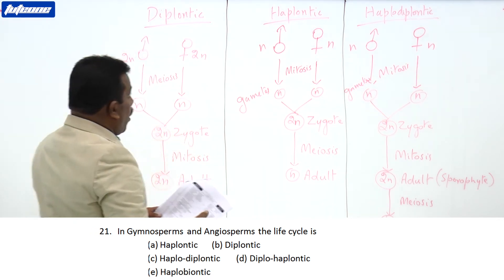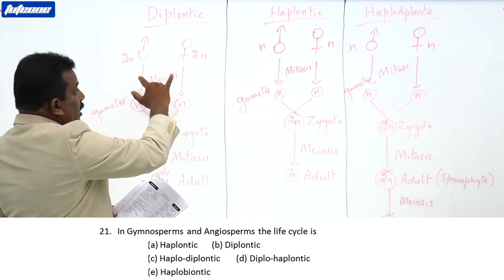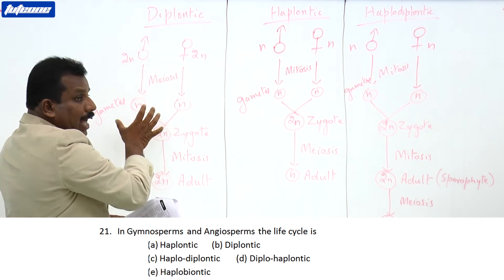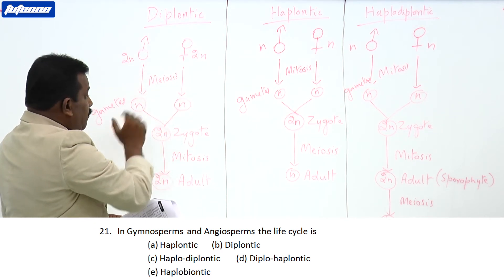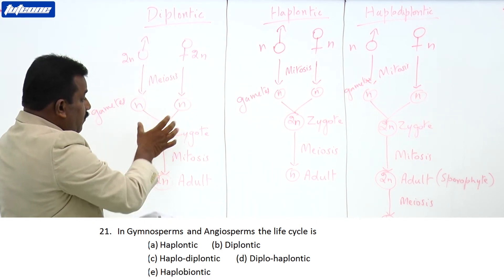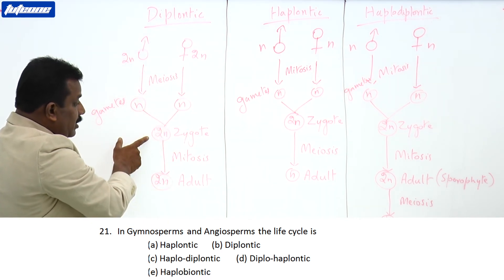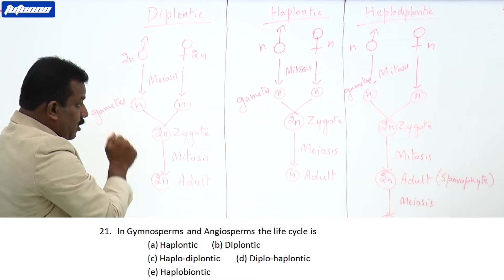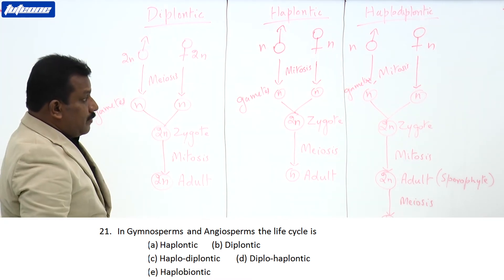In a diplondic life cycle, the parents are diploid. They produce gametes after meiosis. They fuse together, and a diploid zygote is formed. The zygote directly develops into a diploid adult.